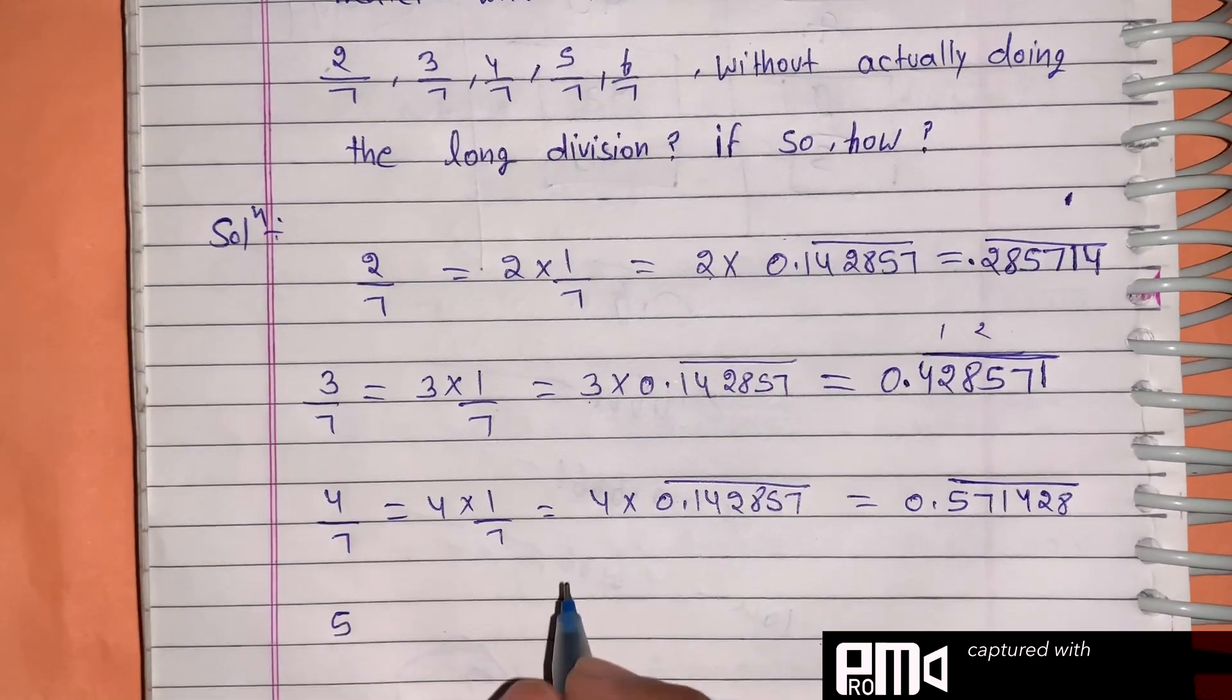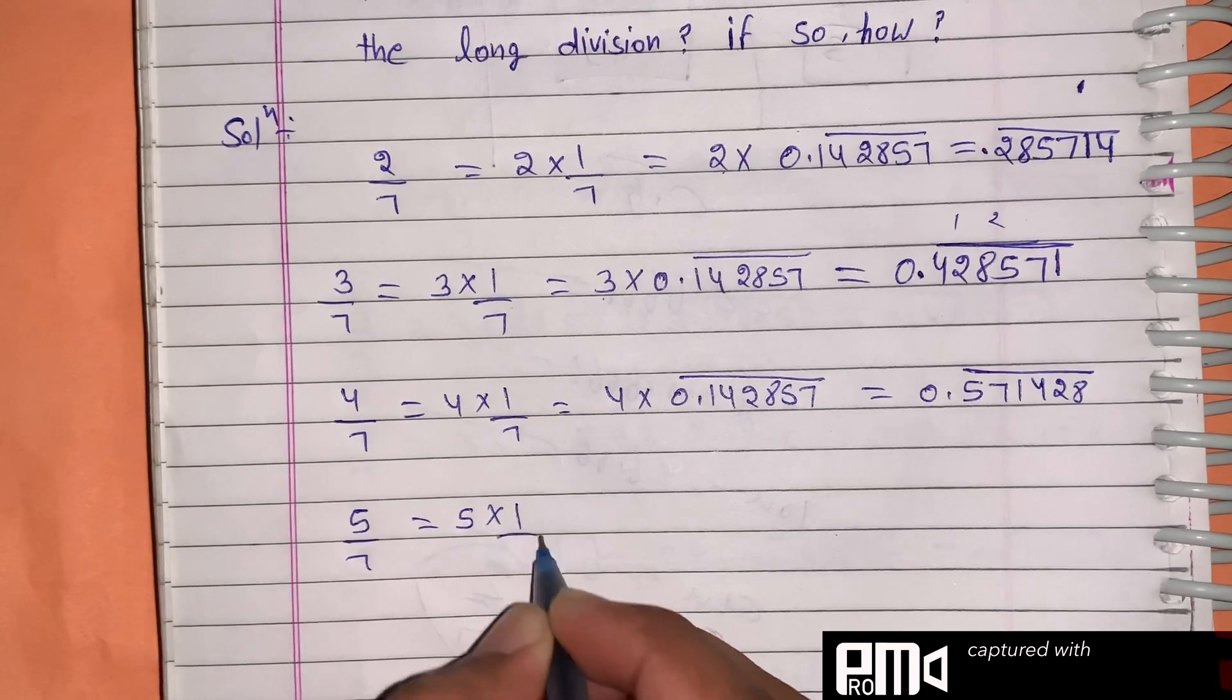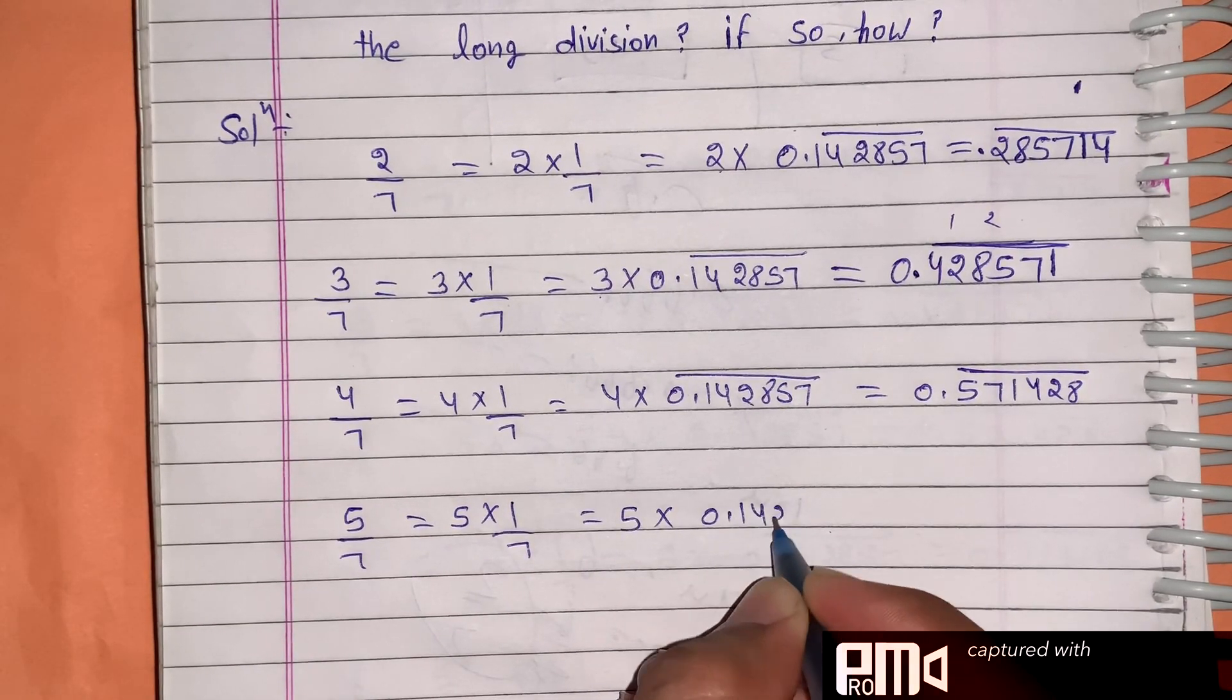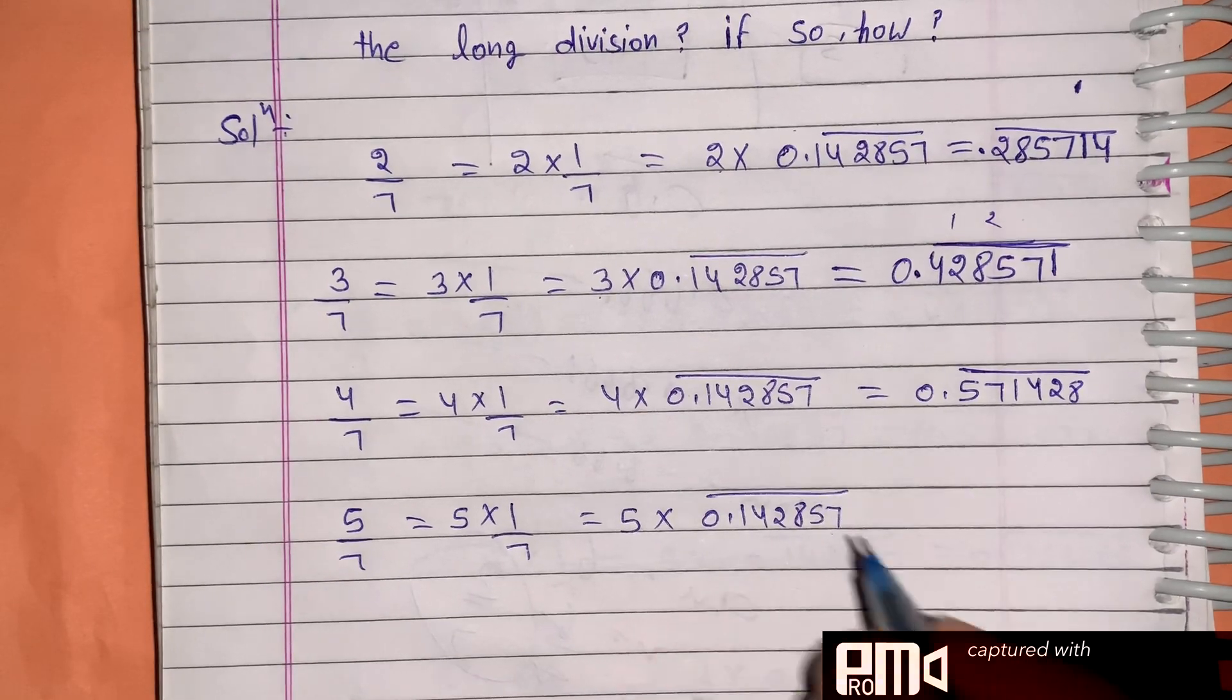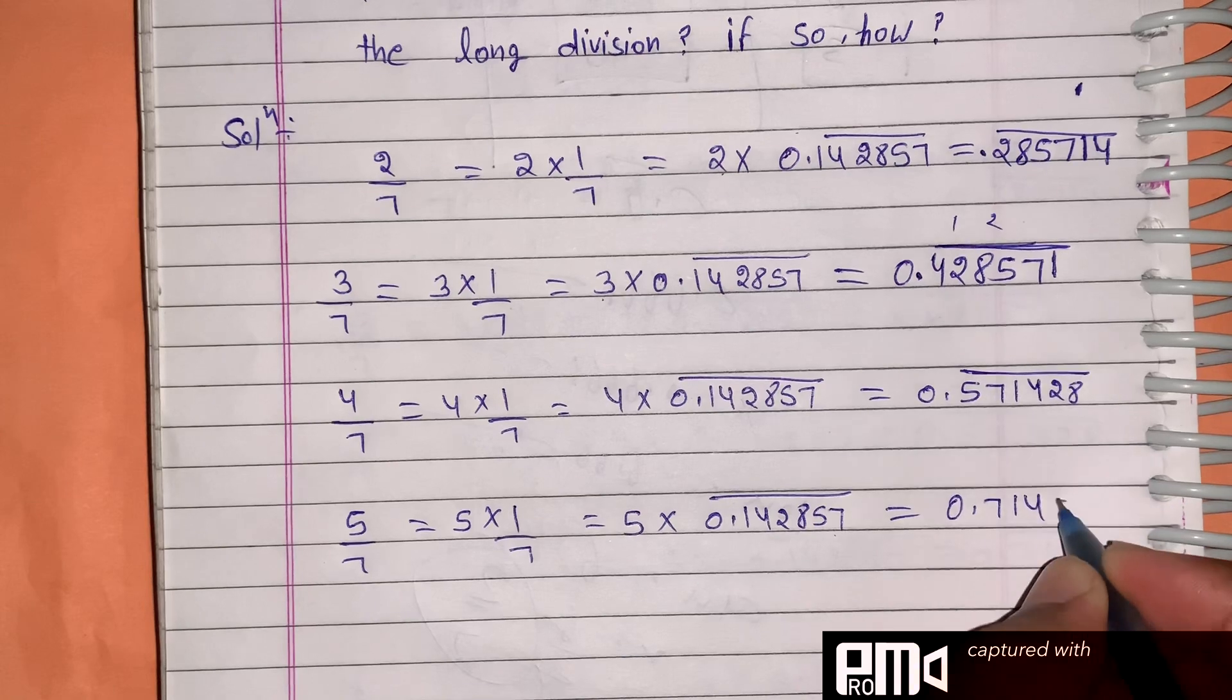We will take 5/7, which is 5 times 1/7. 5 times 0.142857 equals 0.714285 repeating.